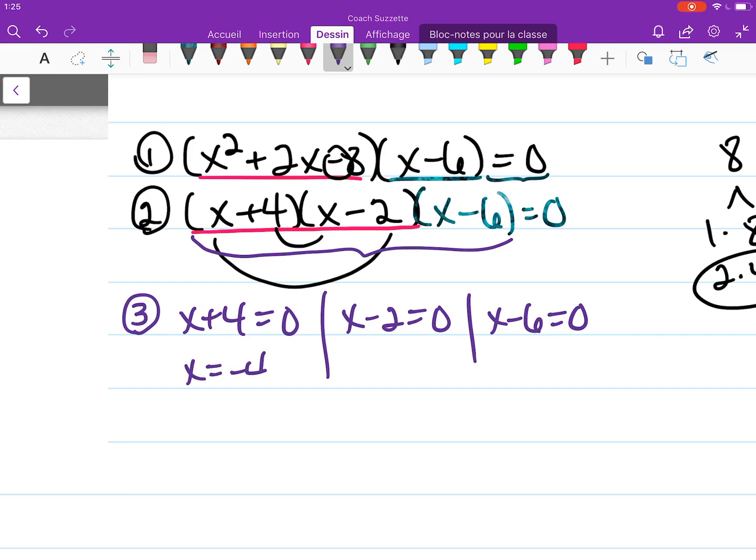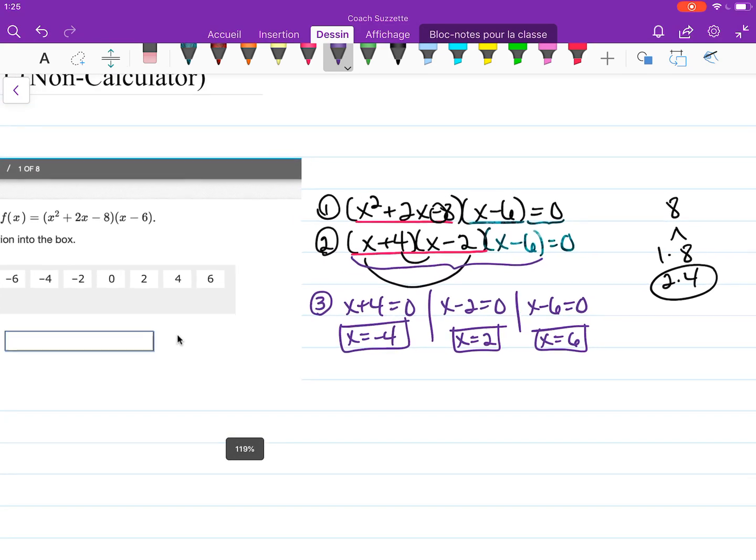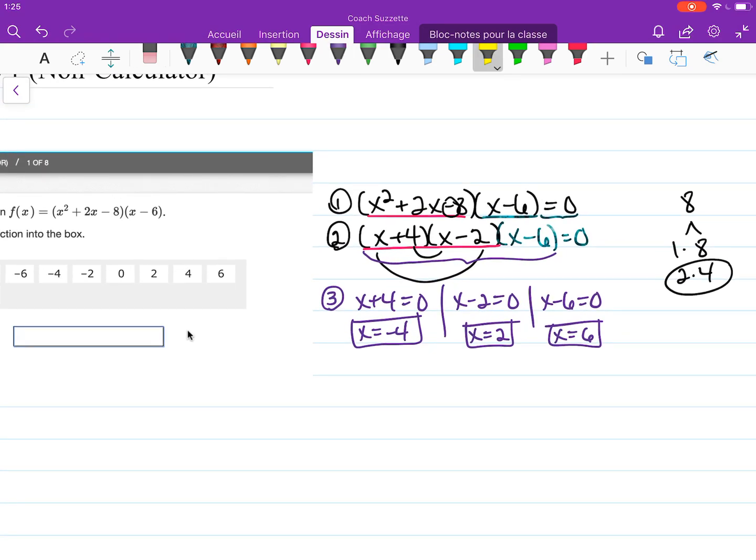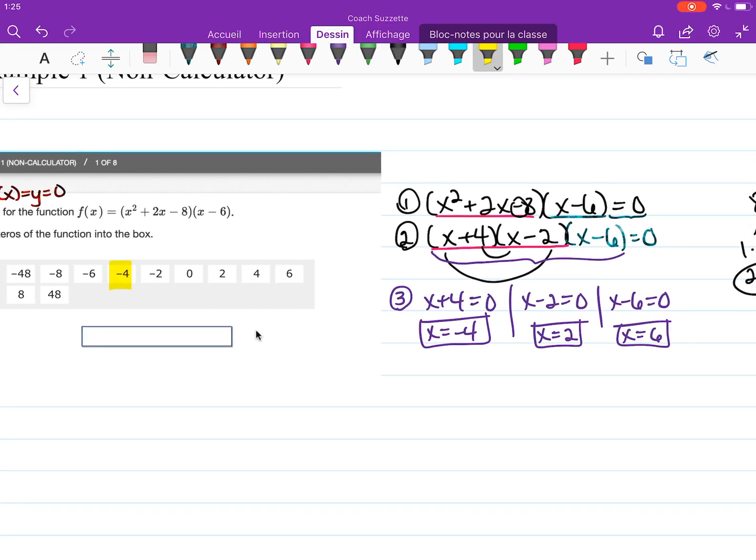So we have x = -4, x = 2, x = 6. And that would be negative 4, positive 2, positive 6. And we're done.